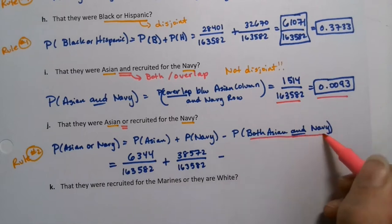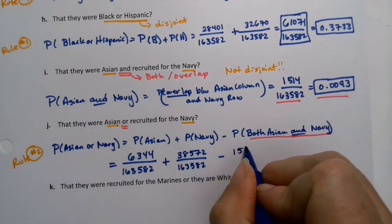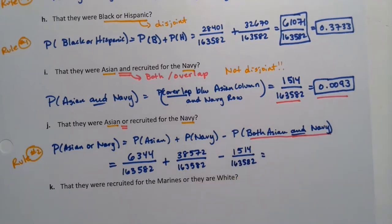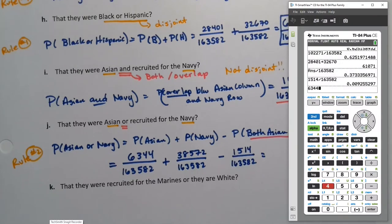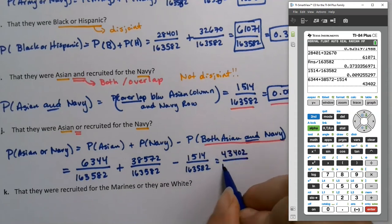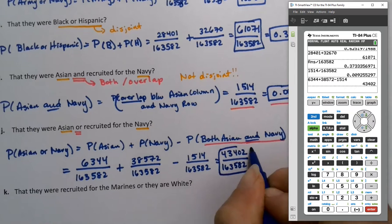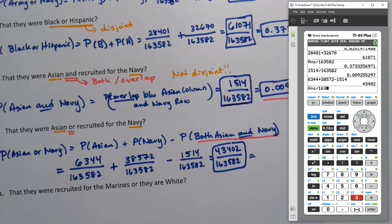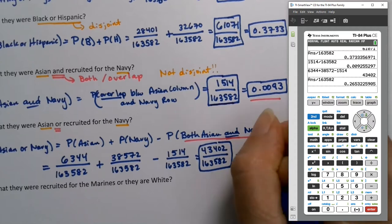So we want to take away that overlap. So you want to take away 1,514. And since all of the fractions have the same denominator, we can just add and subtract. Simple as that. So 6,344 plus 38,572 minus 1,514, and that's our new numerator. It'll be 43,402 over 163,582. And as with all the problems so far, that's a perfectly valid probability, but they wanted four decimal places. So I will find it. And I get 0.2653 if I'm rounding to four decimal places.